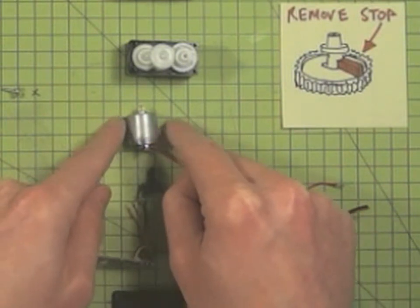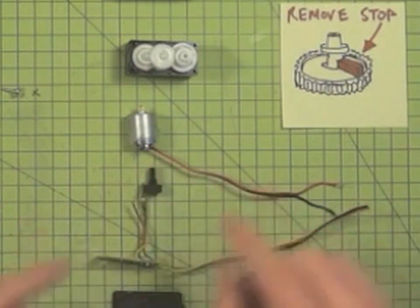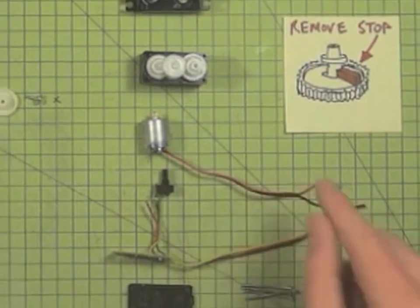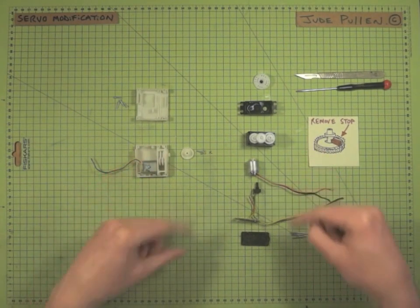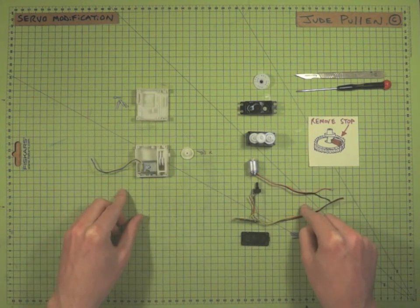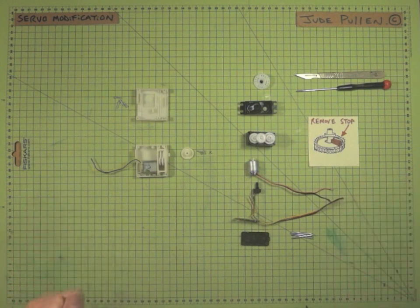Basically once you've got this motor out, you can solder a red and a black wire, positive and negative, and that makes it essentially the same as this cheap model here. So it basically takes all the complexity out and allows you to have a 360-degree high-torque motor for your robot body.